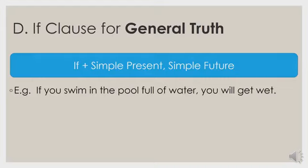For if clause for general truth, the pattern used is if plus simple present in the if clause, and simple future in the main clause — same as conditional sentence type one. For example: 'If you swim in a pool full of water, you will get wet.' This expresses a general truth.